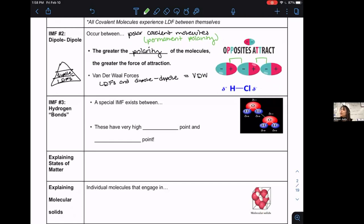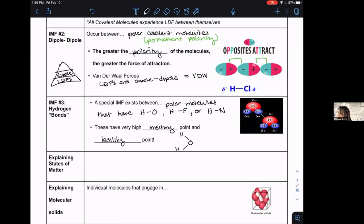The third type of IMF is called hydrogen bonding. Big emphasis on the fact that we use the word bond, but it's not a real bond. This is a very special IMF that exists between polar molecules, because of course you can't advance unless you've met everything else. That have hydrogen connected to an O or hydrogen connected to an F or hydrogen connected to an N in the molecule. These have very high melting and boiling points. Water is the best example. Another water molecule's H will be attracted to another water molecule's O.